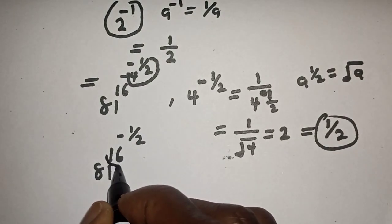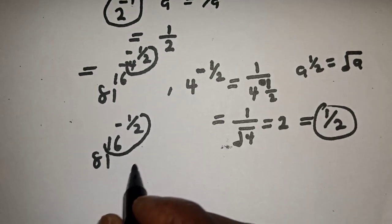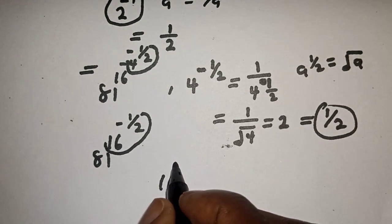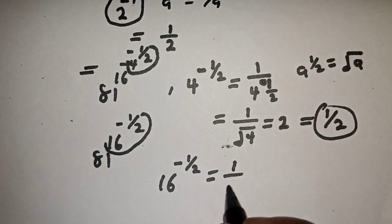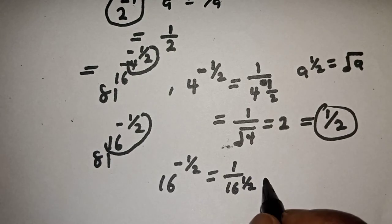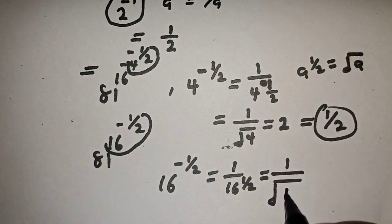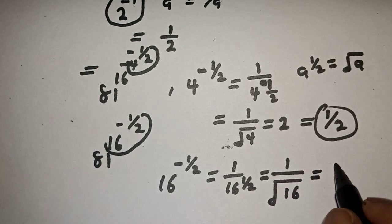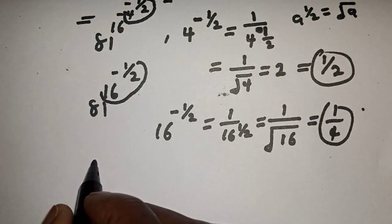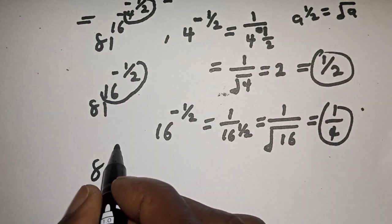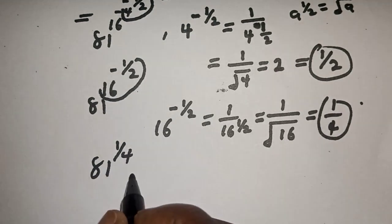Let's work with these two exponents again: 16 raised to power minus 1 over 2. This is equal to 1 over 16 raised to power 1 over 2, which equals 1 over 4. Then we have 81 raised to power 1 over 4.